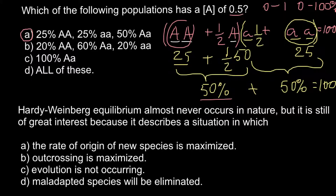Now let's move to answer B: 20% homozygous dominant, 60% heterozygous, and 20% homozygous recessive. So 20% plus one half of 60% gives 20% plus 30% = 50%. The same applies for the recessive allele, so we can also circle answer B — it also has 50% dominant allele frequency.